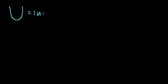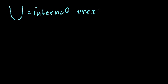Big uppercase U is the internal energy of a system, and it's really everything thrown in there. It's the kinetic energy of the molecules, the potential energy if the molecules are vibrating, the chemical energy of the bonds, and the potential energy of electrons that want to get someplace.